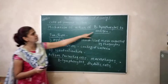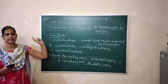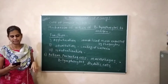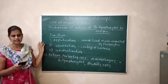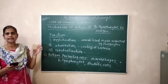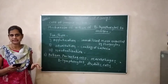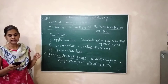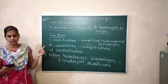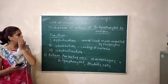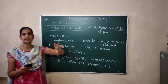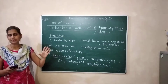B lymphocytes secrete a specialized type of glycoprotein called antibodies. All these antibodies are circulated through the body fluid with the help of lymph and blood.